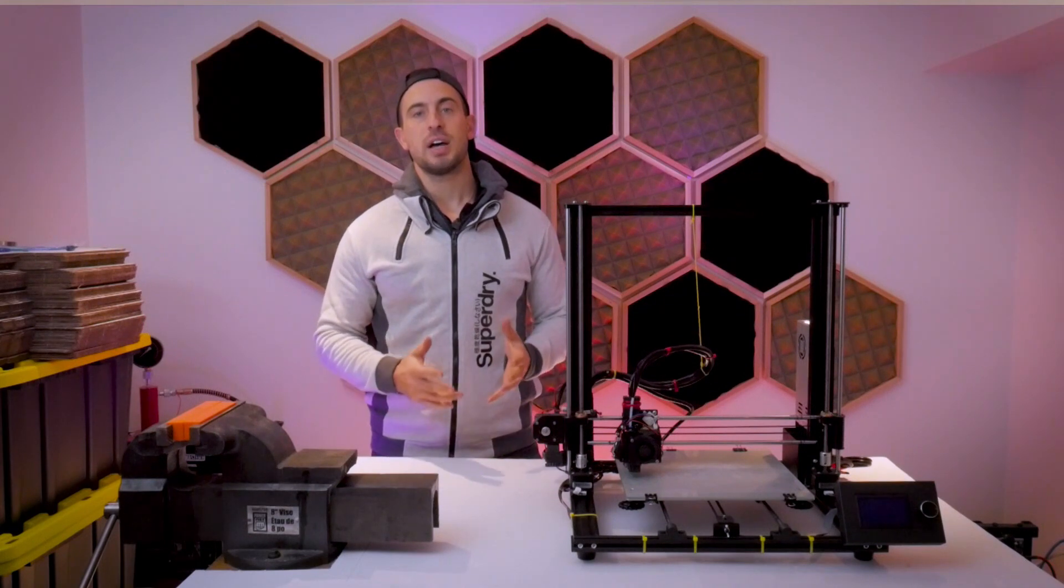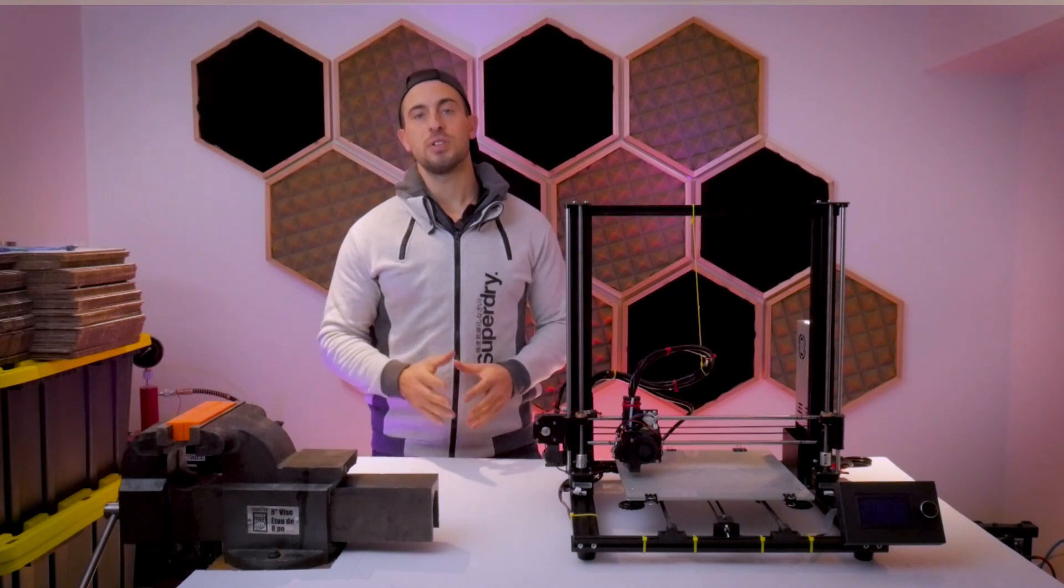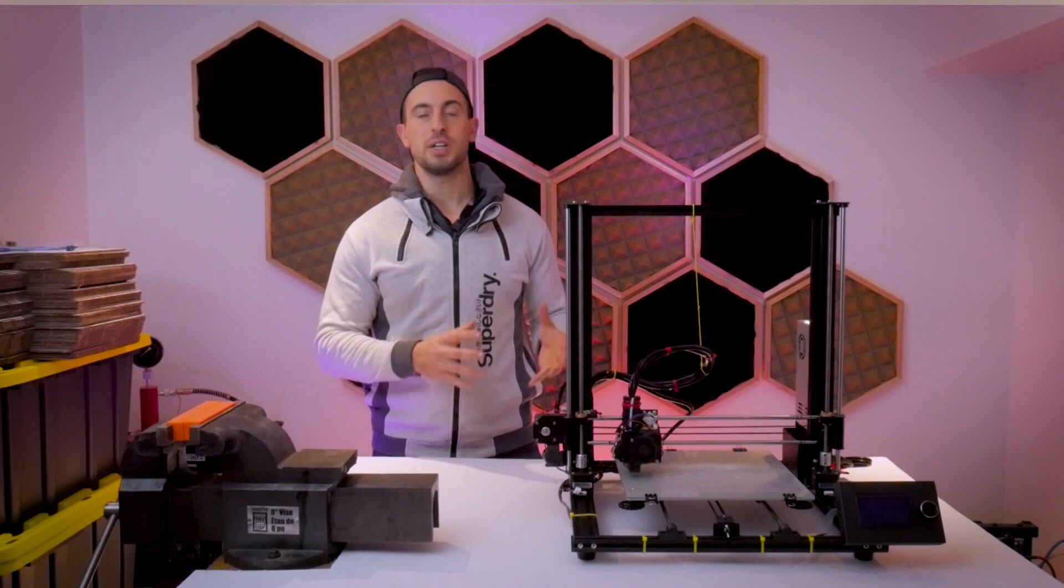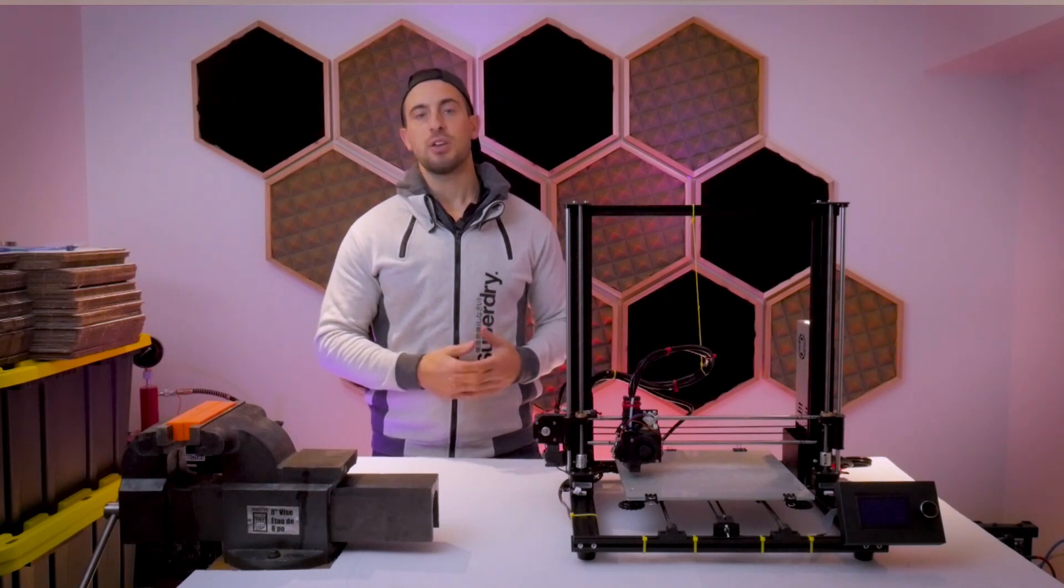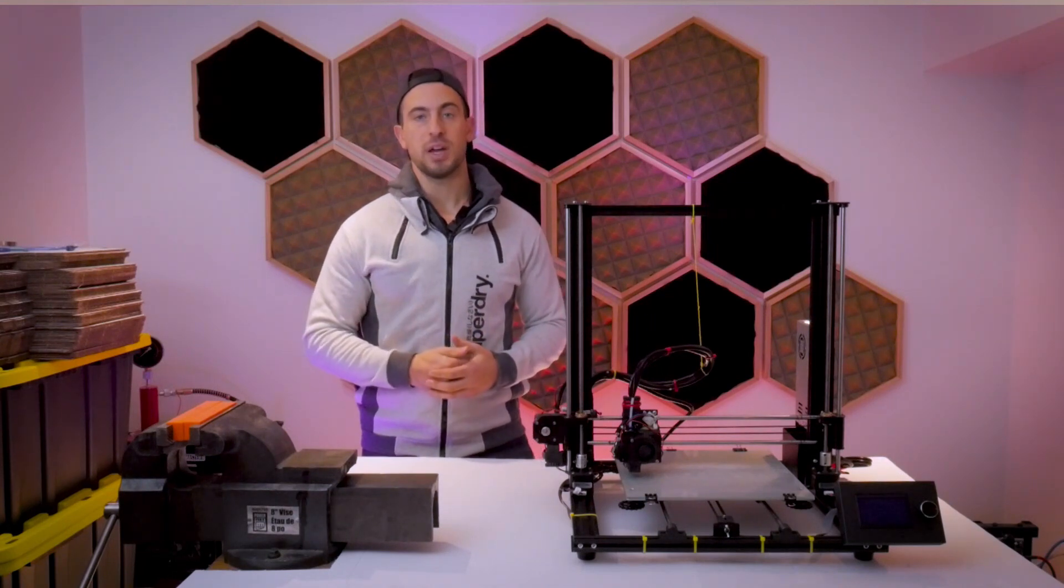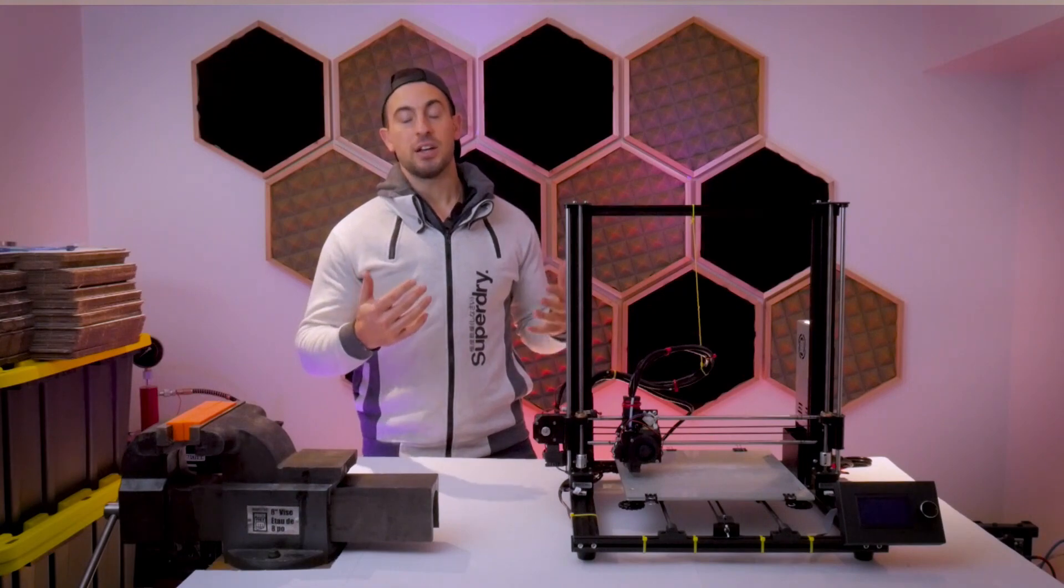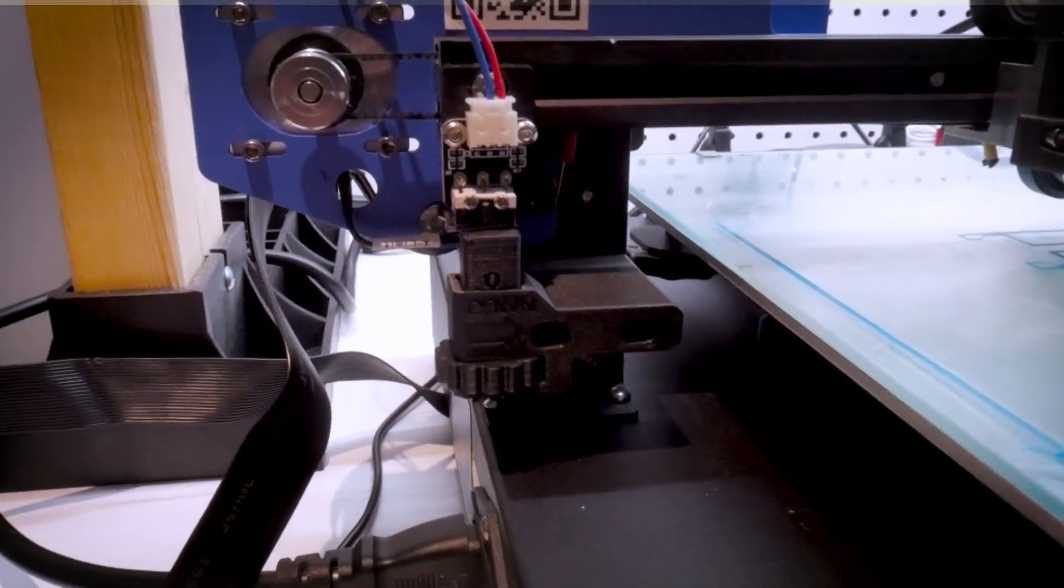In a previous video I showed you how to eliminate the auto bed leveling feature on a printer and switch over to a traditional Z end stop. I used my Anet ET5X printer for that demonstration and created an adjustable Z end stop for that printer, which seemed to be quite a popular modification.